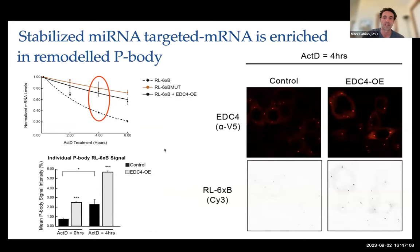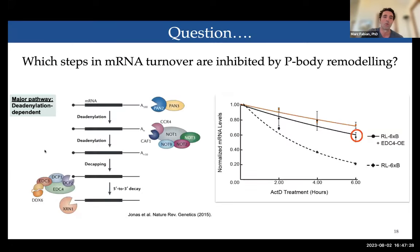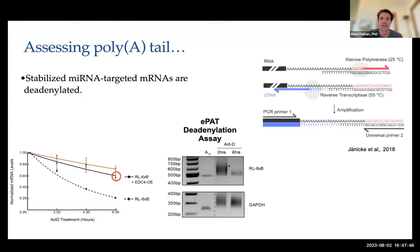When we looked at where the stabilized RNA was actually being stabilized, we used fluorescence in situ hybridization and could see that the stabilized RNA was being enriched within these P-bodies, suggesting the P-body itself was somehow stabilizing these RNA molecules. To understand how, we looked at the deadenylation and decapping pathway. Using PCR-based strategies to examine the poly-A tail, even though the RNA was very stable, it had over time still lost its poly-A tail, suggesting the RNA was getting deadenylated. That step was not being inhibited, but the RNA was stabilized in a deadenylated form.